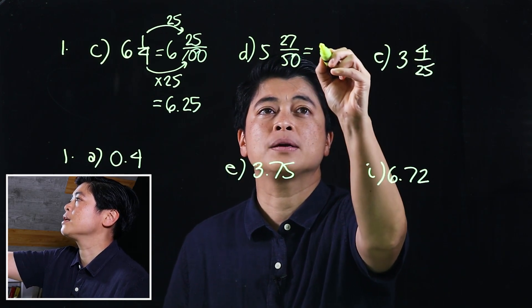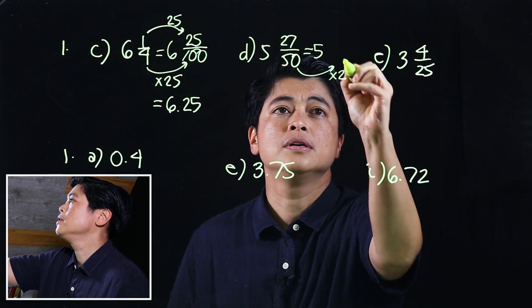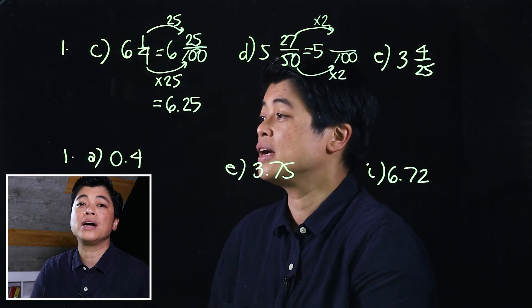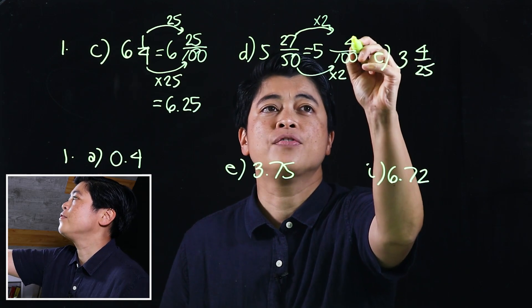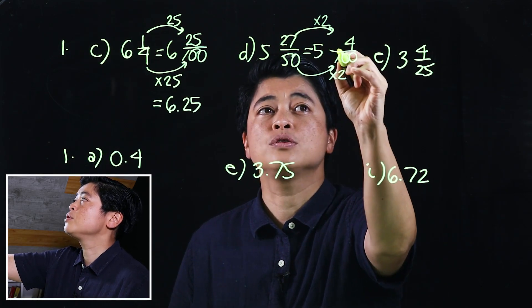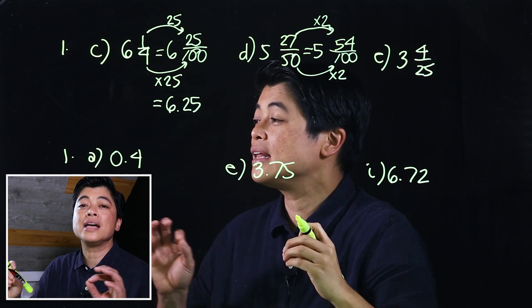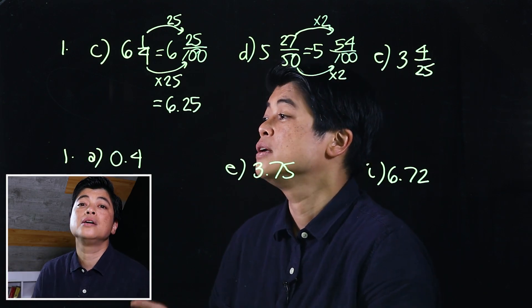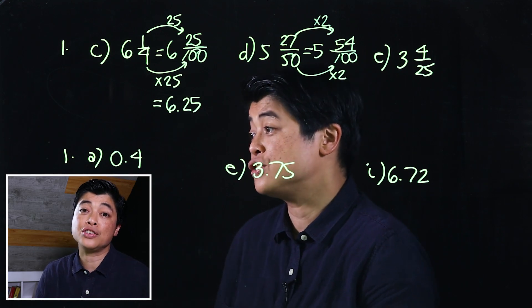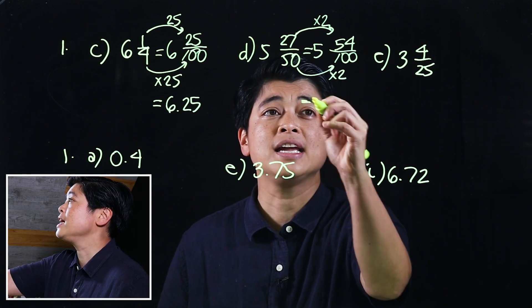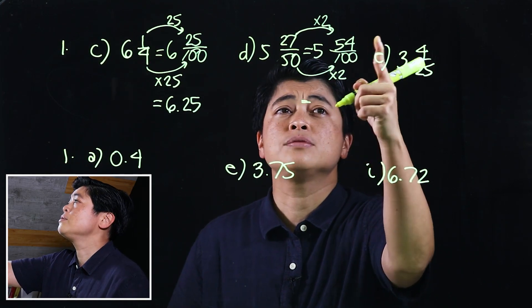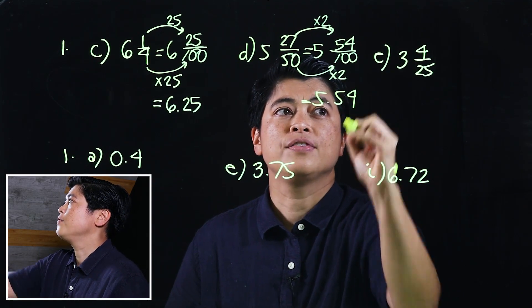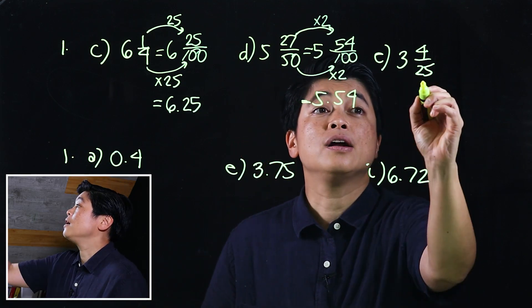Using the same approach, since this is over 50, I know I can multiply that by 2, making it 100, and I have to multiply the top by 2 as well, which means that will be 14, and 2 times 2 plus 1 is 5. At this point, we really need to start training kids to do simple multiplications with just 1 or 2 digits multiplied by a single digit. Since it's over 100, move the decimal two places to the left, so that's 5.54.